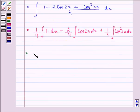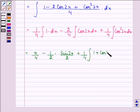Now we have x by 4 minus 1 by 2, integral of cos 2x is sin 2x by 2, plus 1 by 4. Here, cos squared 2x can be written as 1 plus cos 4x by 2 into dx plus c1.